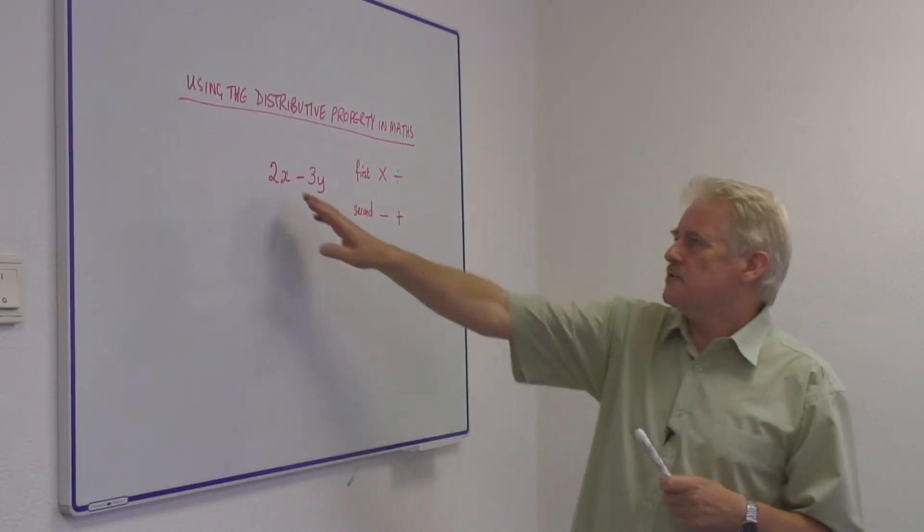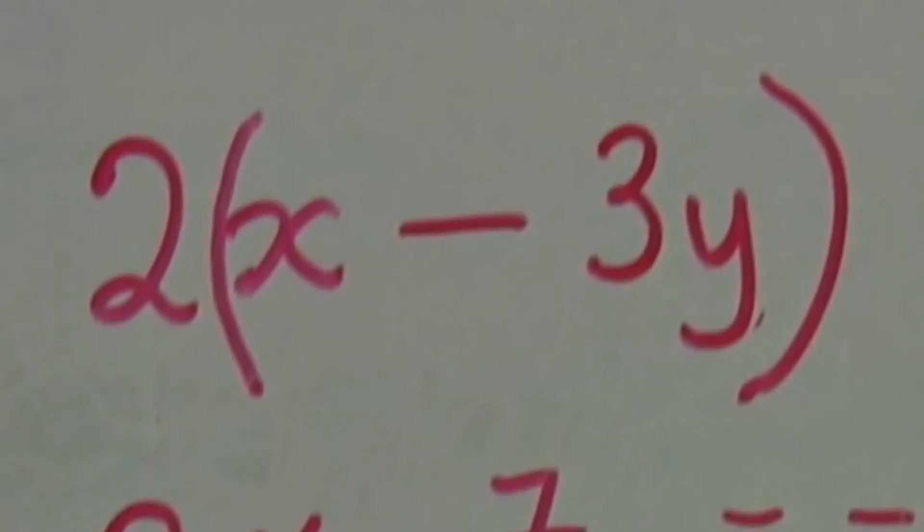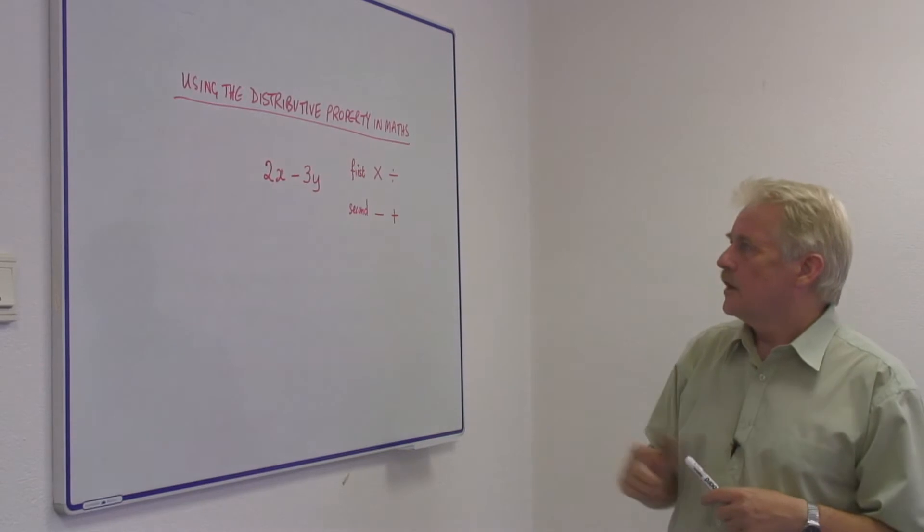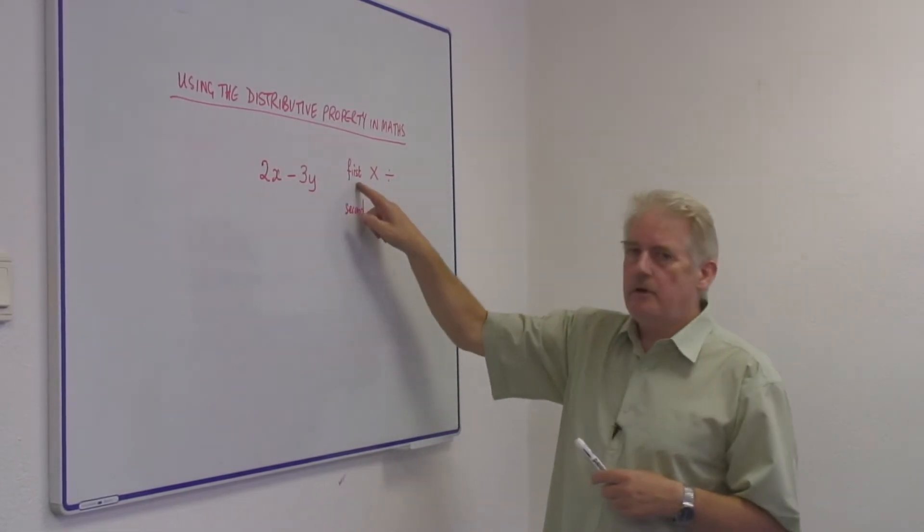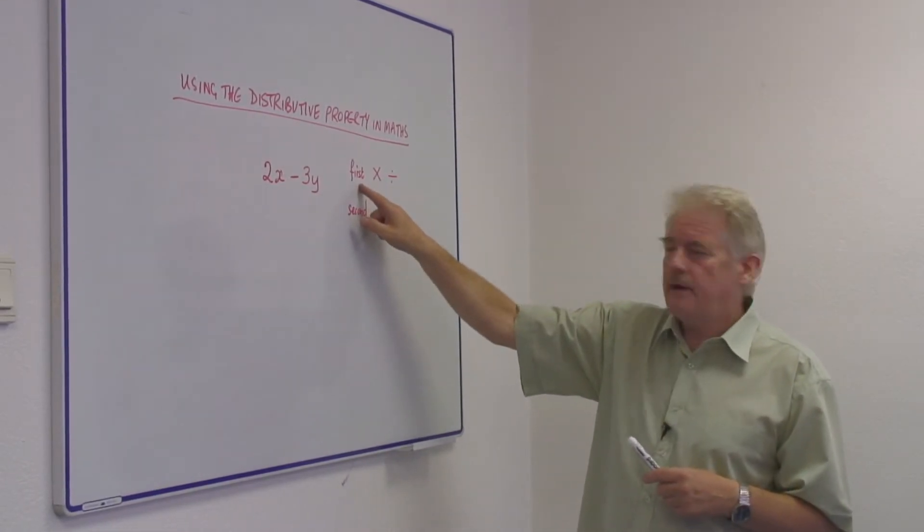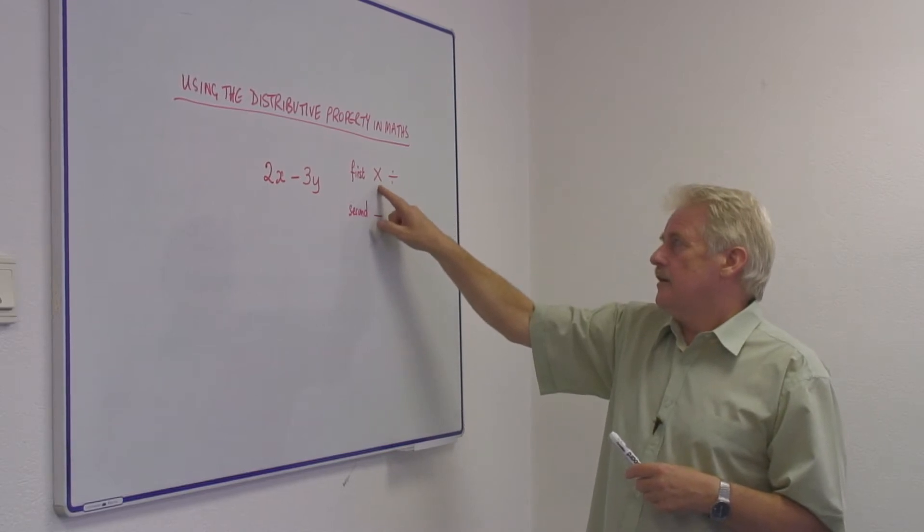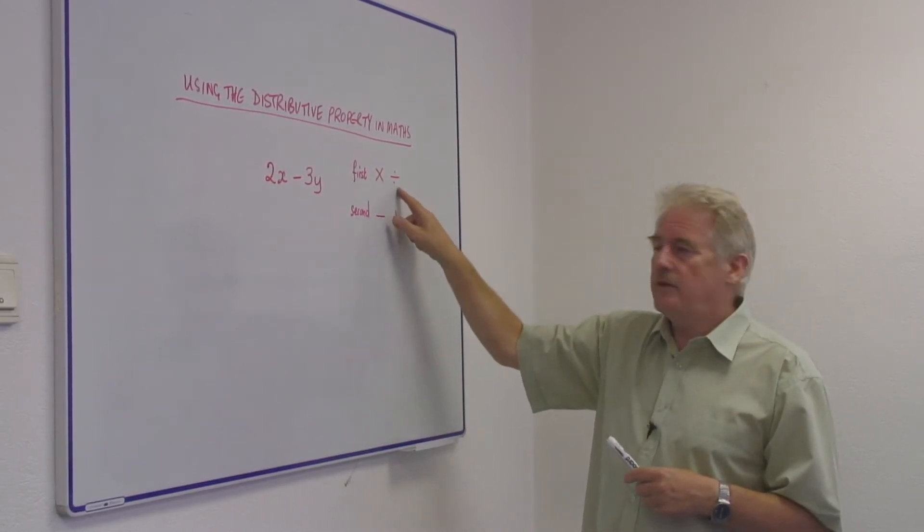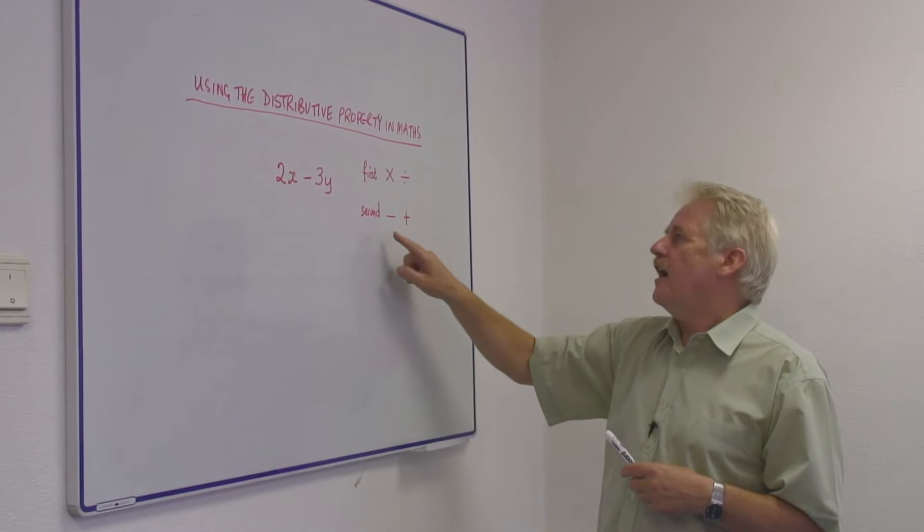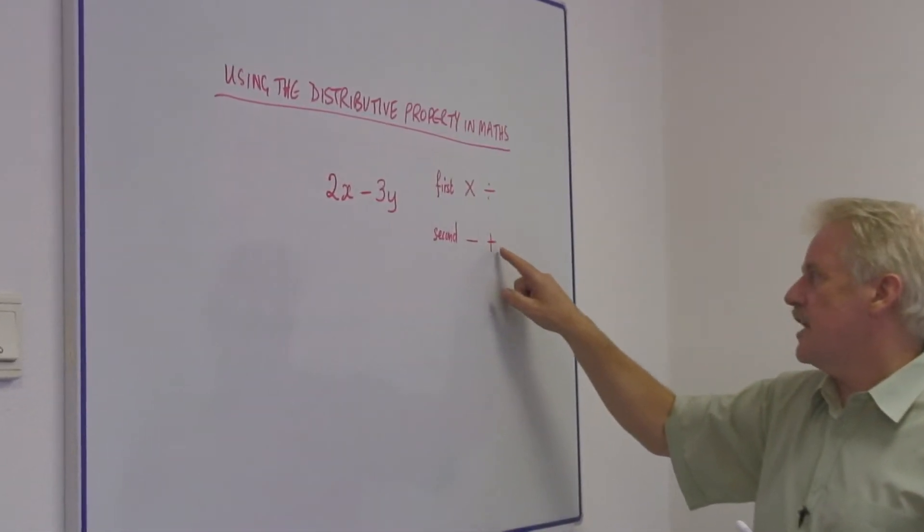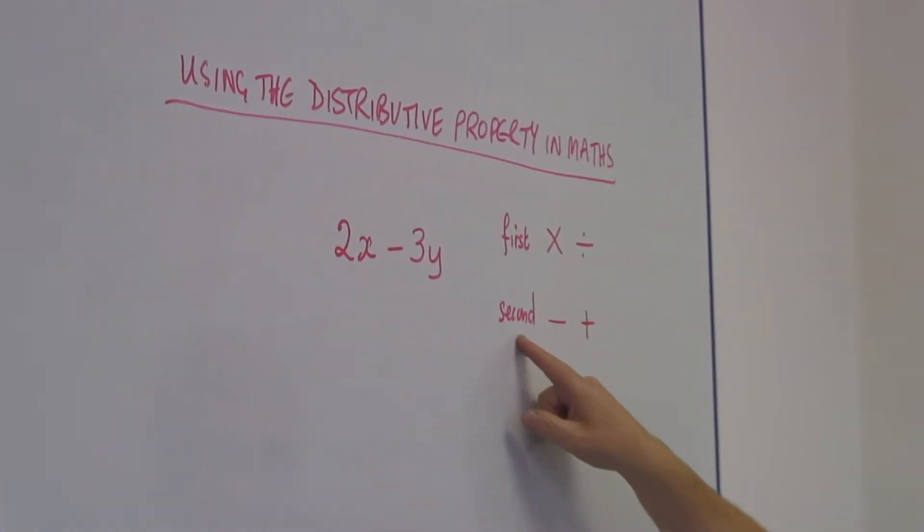Now, I have put an expression 2x minus 3y on the board here. And what you have to remember is that normally in mathematics, the multiply and divide functions are done first, and the subtract and add functions are done second.